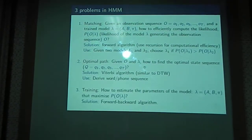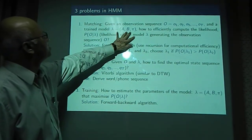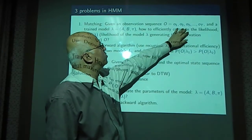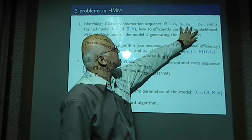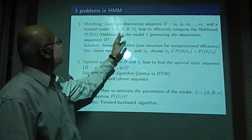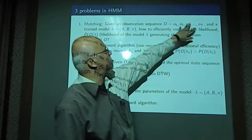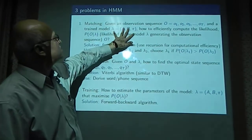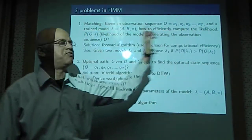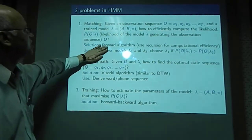We can state three problems. First, if you have a trained model given by its parameters, how do you compute the similarity between a test feature vector sequence and the model? This is essentially asking: what is the likelihood that this model generated this test feature sequence — that is, when somebody spoke this sentence, it gave rise to this sequence of feature vectors. We will use the forward algorithm for this, which we will learn about today.